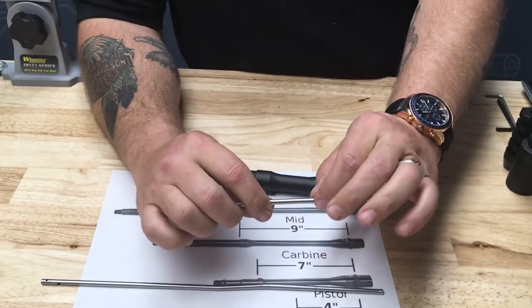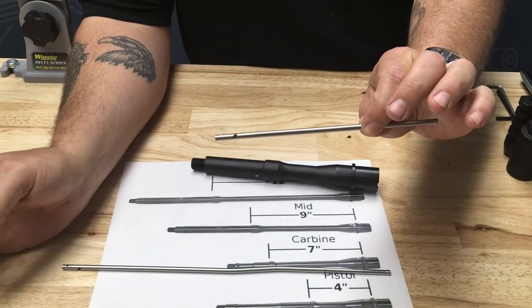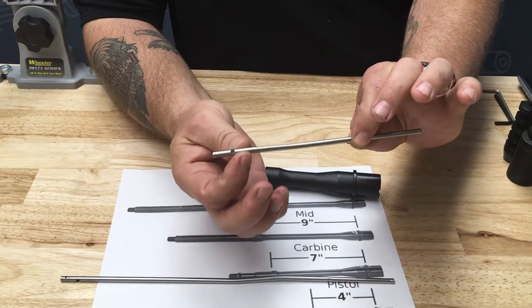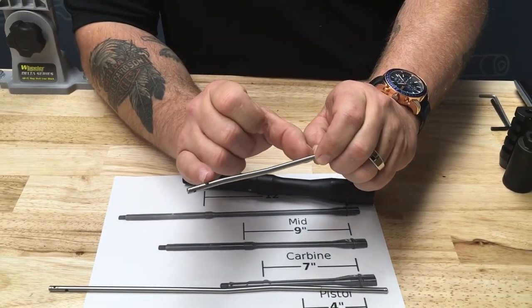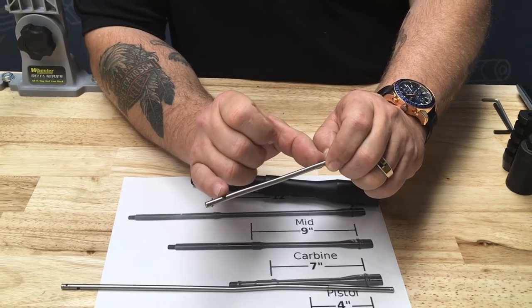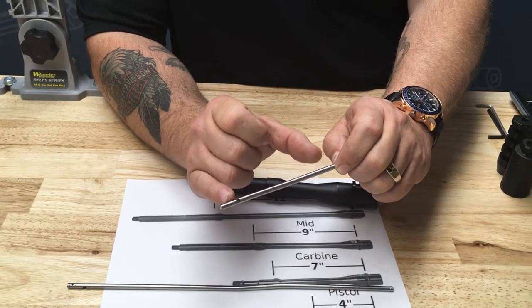Why that is, is because this much sticks back into the receiver and about this much sticks into the gas block. So what you're truly measuring on these is the functional length of about right here, being four inches.